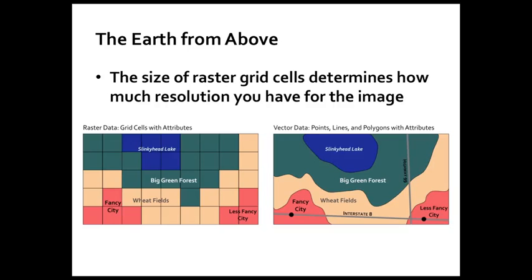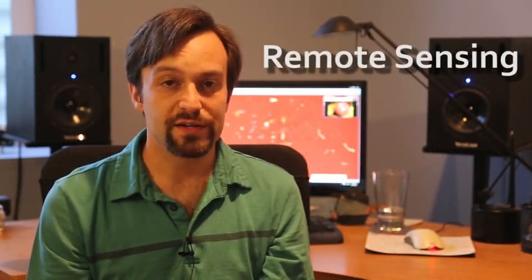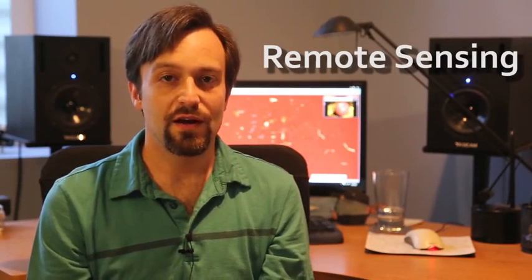There are trade-offs for using both of these different data models, but they're both extremely important to geography. The science and technology associated with imaging the Earth from above is called remote sensing — it's a huge discipline involving a lot of engineering, geography, analytical methods, and math. And it's not just photographs; it can also involve the use of lasers and infrared sensors, and other forms of light that are not visible to the human eye.